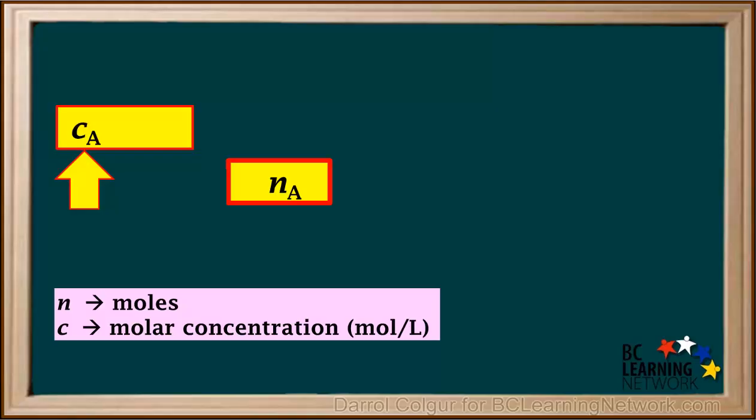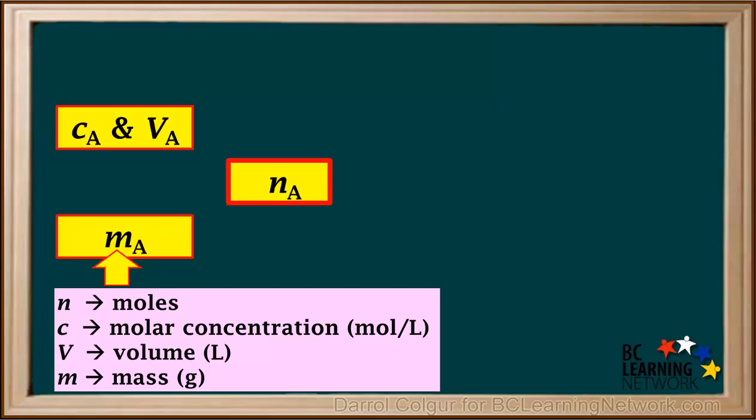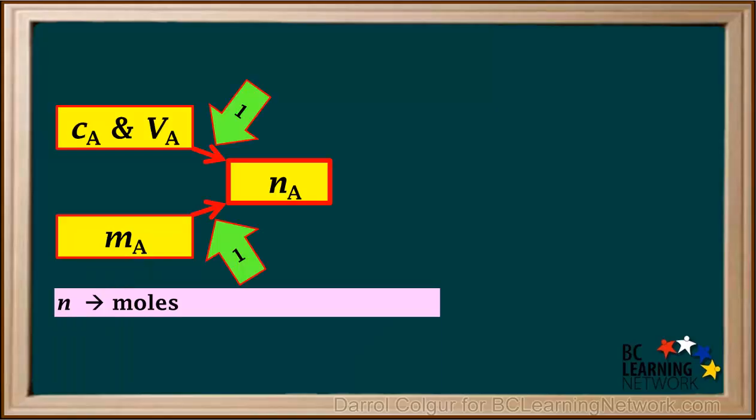The information we're given about A could be the molar concentration of A, represented by the letter C, and the volume of A in liters, represented by the letter V, or it could be the mass of A in grams, represented by the letter M. Whatever we're given, step one of a titration calculation is to convert what we're given to moles of reactant A, or NA.